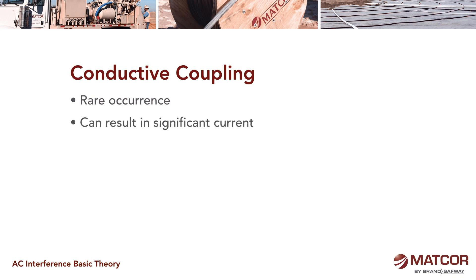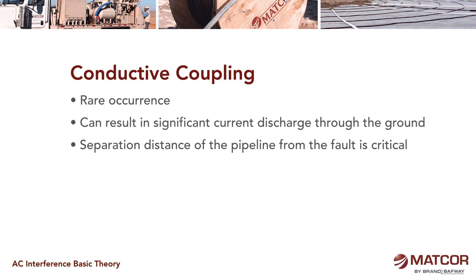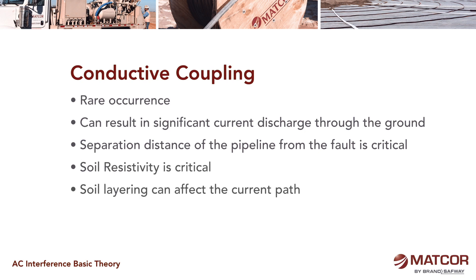Conductive couplings are rare occurrences but can result in significant current discharging through the ground. Separation distance of the pipeline from the fault is critical, and soil resistivity is critical. There can be soil layering effects — you could have a dry layer and a wet layer — and the arc would go through the wet layer. So we often have to measure soil resistivity at different layers or depths to make sure we have a good profile of where arcing can occur.